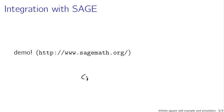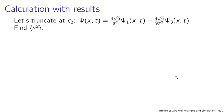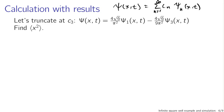Our Sage demo tells us c sub n equals some messy expression, and it can evaluate that and tell us what we need. The actual form of the evaluated c sub n is not that complicated. If we truncate our sum—expressing psi(x,t) as an infinite sum n=1 to infinity of c sub n times psi sub n—at n=3, we just have terms from psi 1 and psi 3. Recall from Sage that c sub 2 was equal to 0.